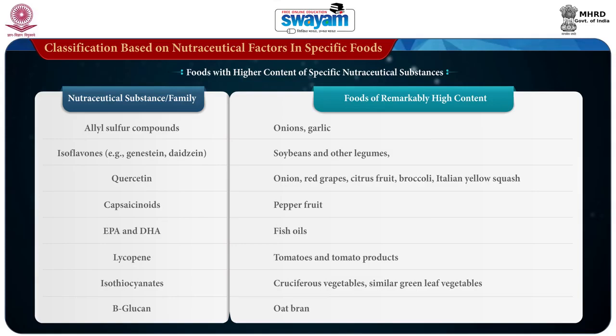Allyl sulphur compounds are present in higher amounts in onions and garlic, whereas soybean and other legumes contain isoflavones like genistein and daidzein in higher amounts. Quercetin is present in onion, red grapes, citrus fruits, broccoli and Italian yellow squash, whereas capsiconoids are present in pepper fruit. EPA and DHA are present in higher amounts in fish oils, whereas lycopene is present in tomatoes and tomato products. Isothiocyanates are present in higher amounts in cruciferous vegetables — cauliflower, cabbage, garden cress, bok choy, broccoli, Brussels sprouts and similar green leafy vegetables — whereas beta-glucan is present in oat bran.